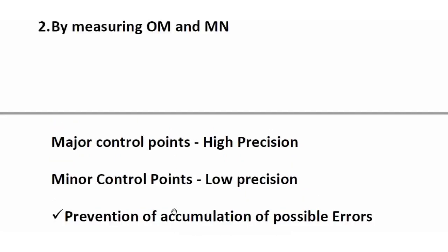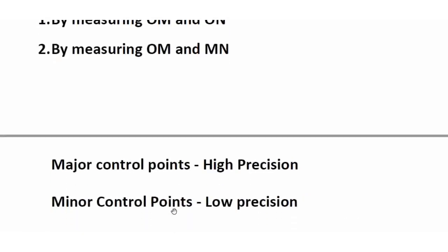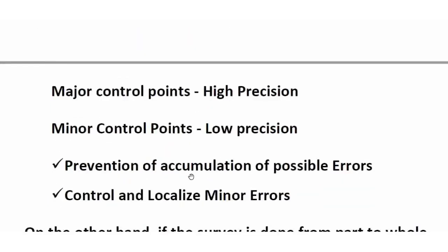Major control points and minor control points. In the case of triangulation, we will fix major control points with high precision and high accuracy across the whole survey area. Then we will fix minor control points — these are interior parts. We divide the survey area into smaller and smaller triangles and fix minor control points with low precision and low accuracy.